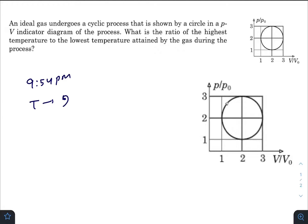Temperature is 26 degrees Celsius and humidity is a little bit high, 65 percent. In today's question we have an ideal gas undergoes a cyclic process that is shown by a circle in a p-V indicator diagram.